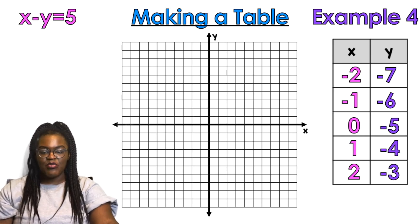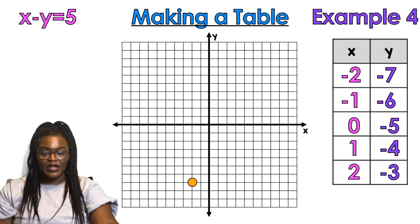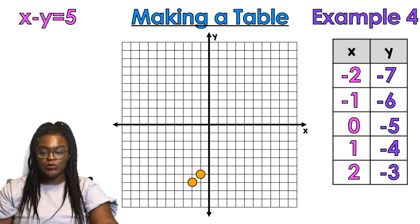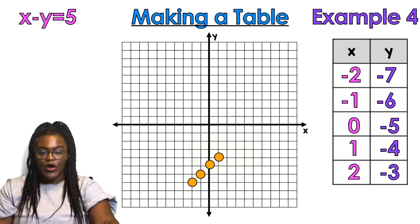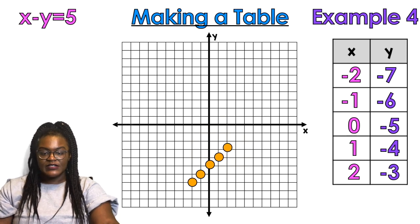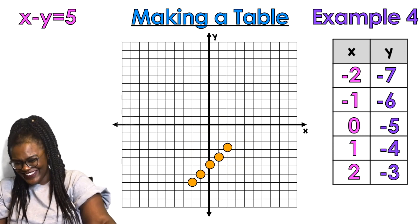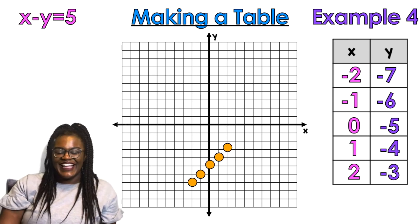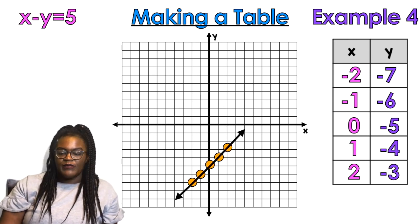Now that I have my five points, I'm going to plot them on the graph: negative 2 comma negative 7, negative 1 comma negative 6, 0 comma negative 5, 1 comma negative 4, and 2 comma negative 3. There's my line.